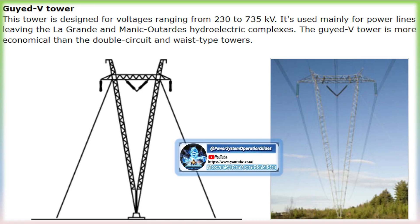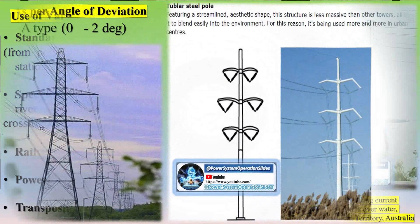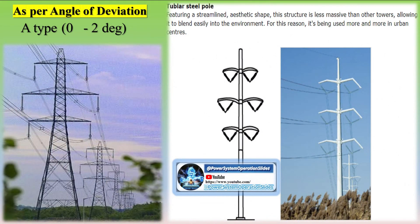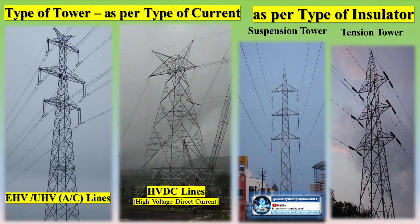The structures commonly used on transmission lines are either lattice type or pole type. Lattice structures are usually composed of steel angle sections, while poles can be wood, steel, or concrete. Each structure type may be self-supporting or guide-supported by cables. Pole type structures are generally used for voltages of 345 kV or less, while lattice steel structures are favored for higher voltage levels. Wood pole structures can be economically used for relatively short transmission distances and lower voltages.